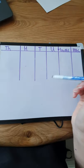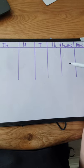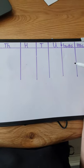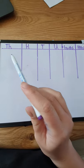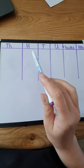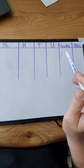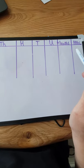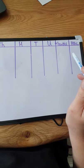This is a place value chart and we're going to use this today to help us to times and divide by 10 and 100. Looking at the place value chart, this is our thousands column, hundreds, tens, units, then we have our decimal numbers — we have our tenths and our hundredths. Our decimal numbers are part towards a whole number.